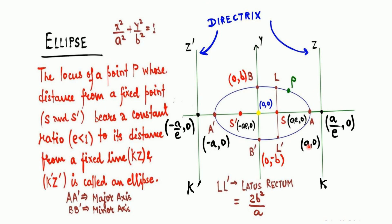Now there are many things to learn. The points A-dash and A are called vertices. The points B and B-dash are called co-vertices — all four are vertex points, but we differentiate them. The horizontal distance from A-dash to A is called the major axis, and the vertical distance from B to B-dash is called the minor axis.